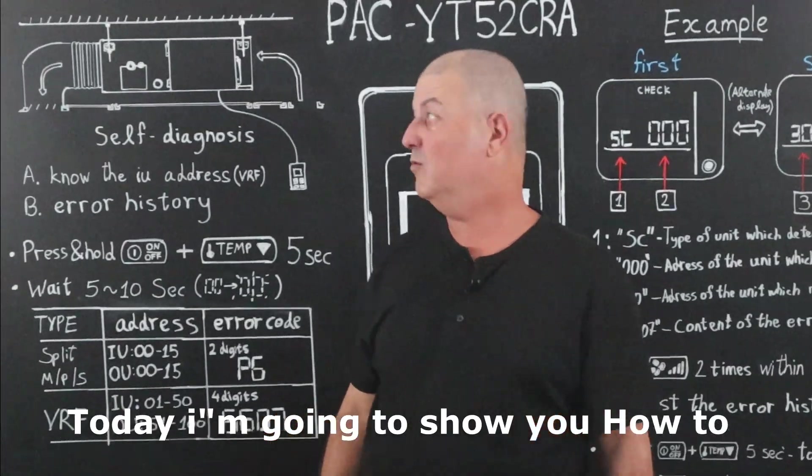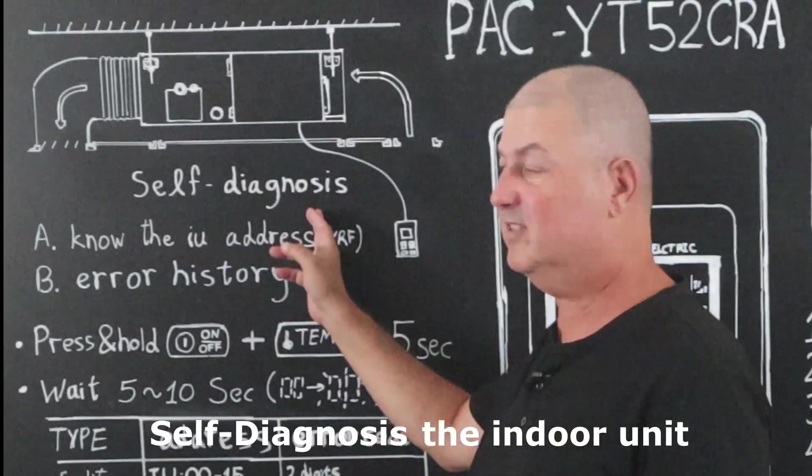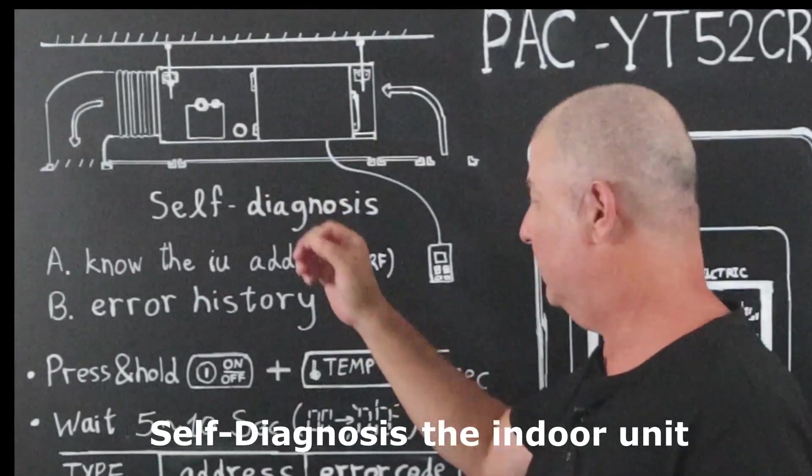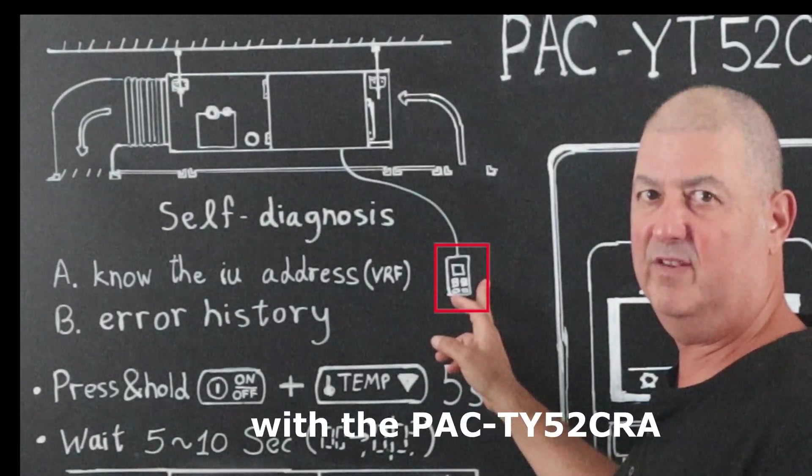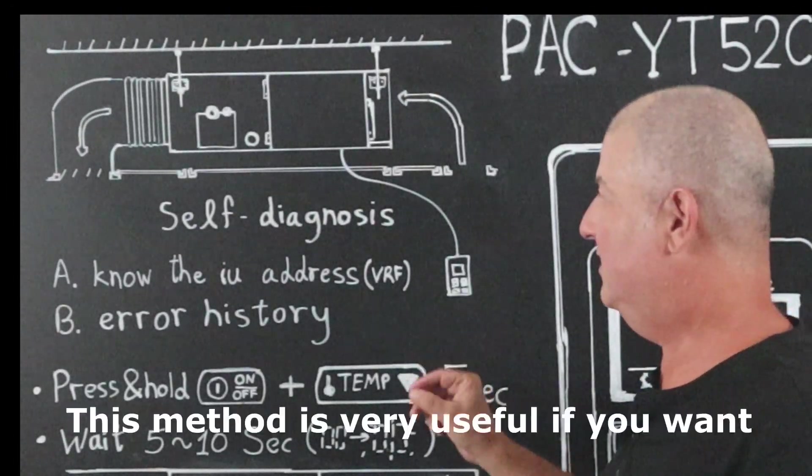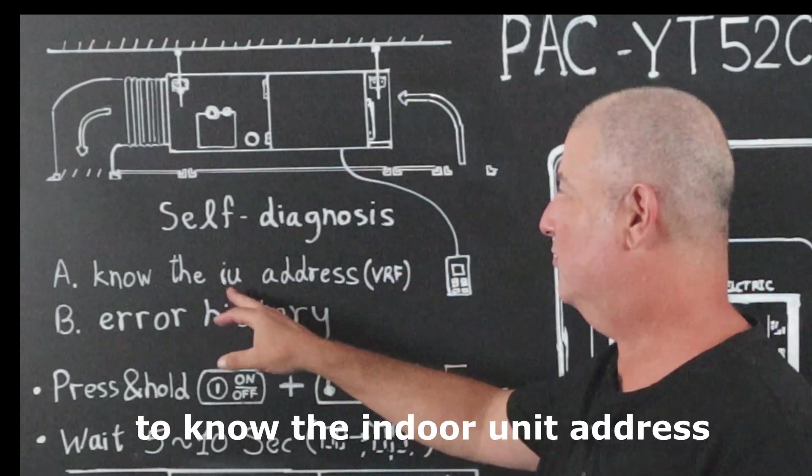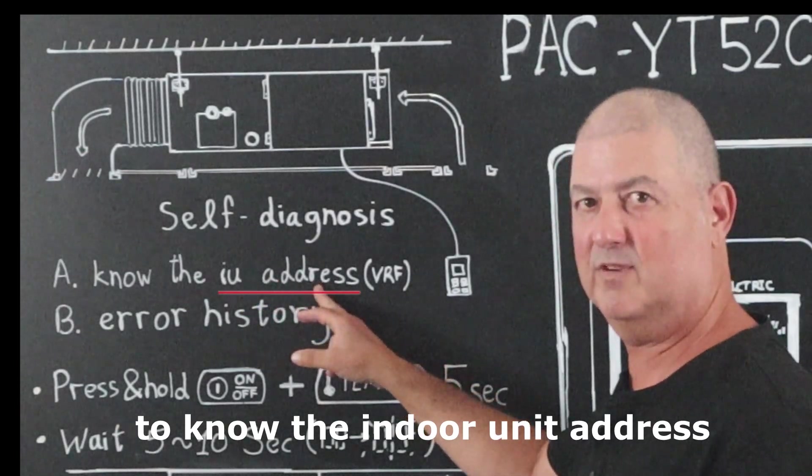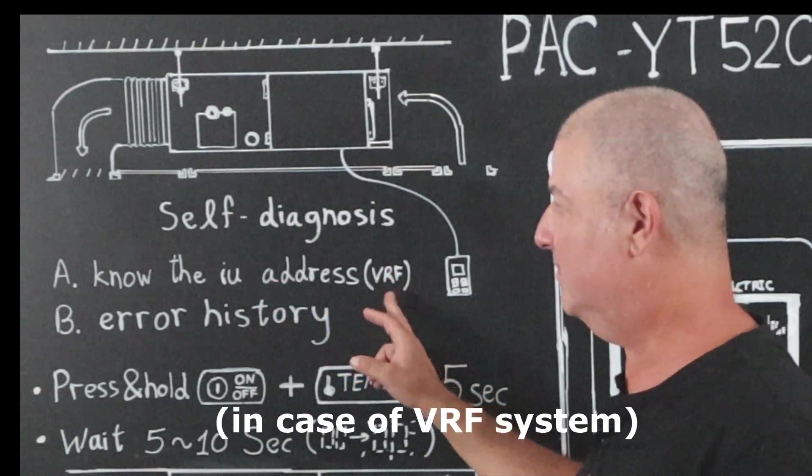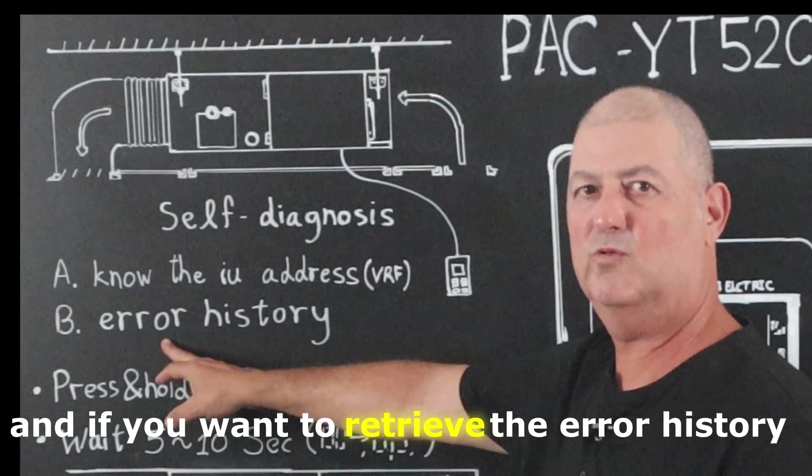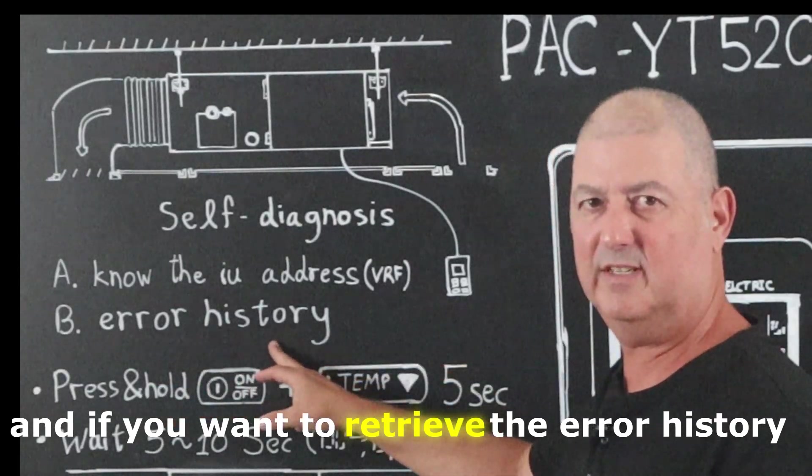Today I'm going to show you how to self-diagnose the indoor unit with the PAC-YT52CRA. This method is very useful if you want to know the indoor unit address in case of VRF system and if you want to retrieve the error history.